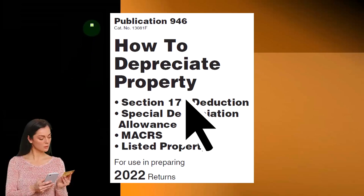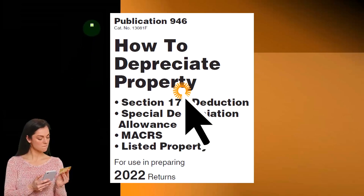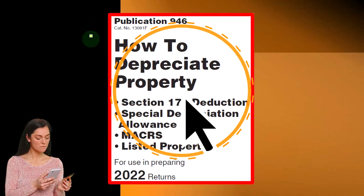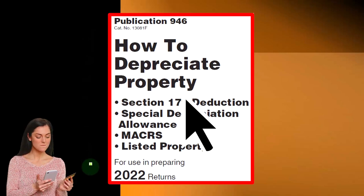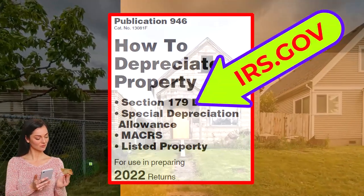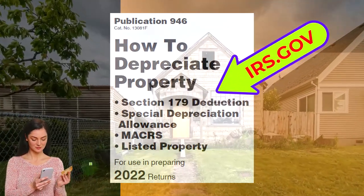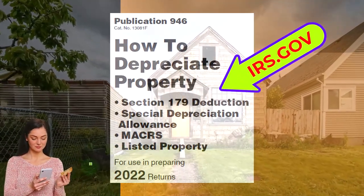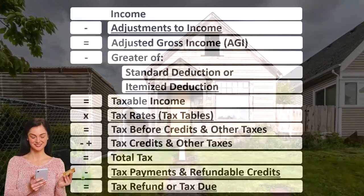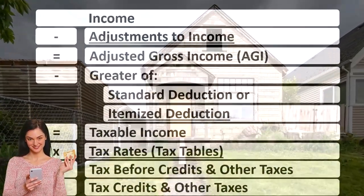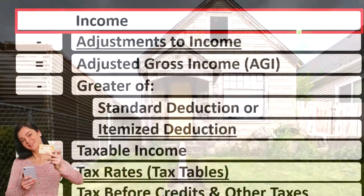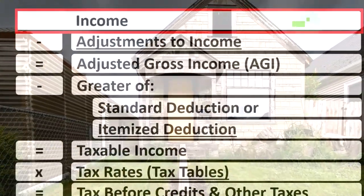Most of this information comes from Publication 946, 'How to Depreciate Property,' tax year 2022. You can find it on the IRS website, irs.gov. Looking at the income tax formula, we're focused on line one income.